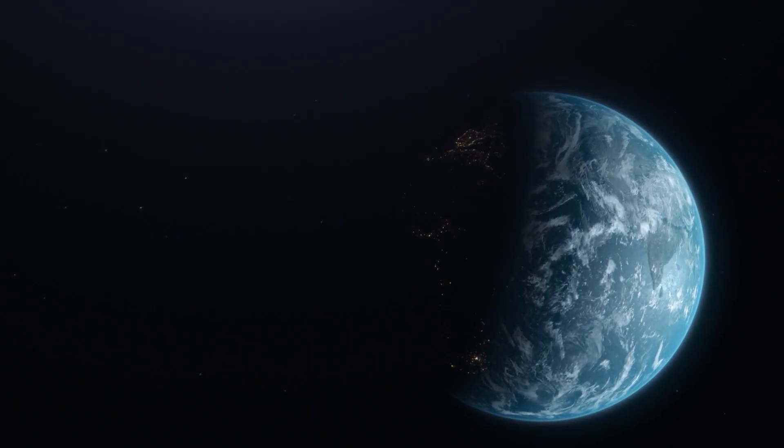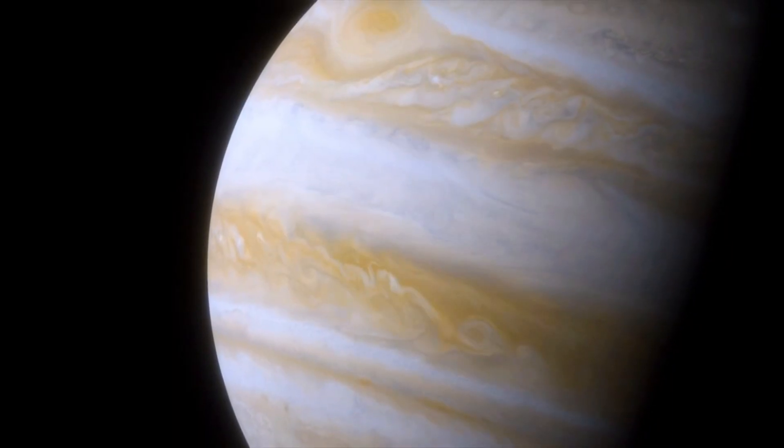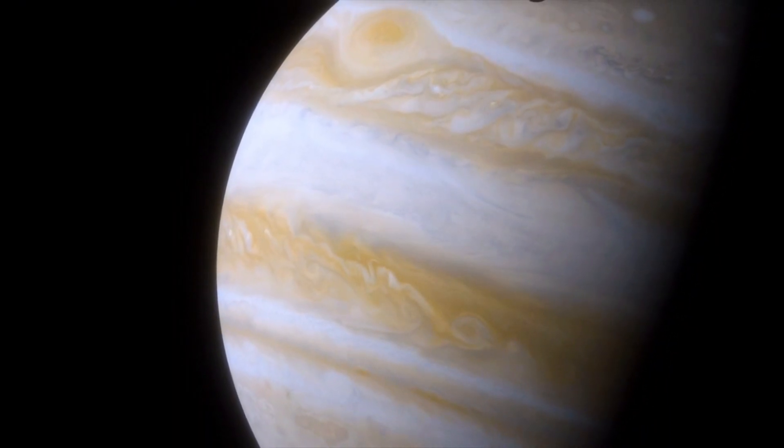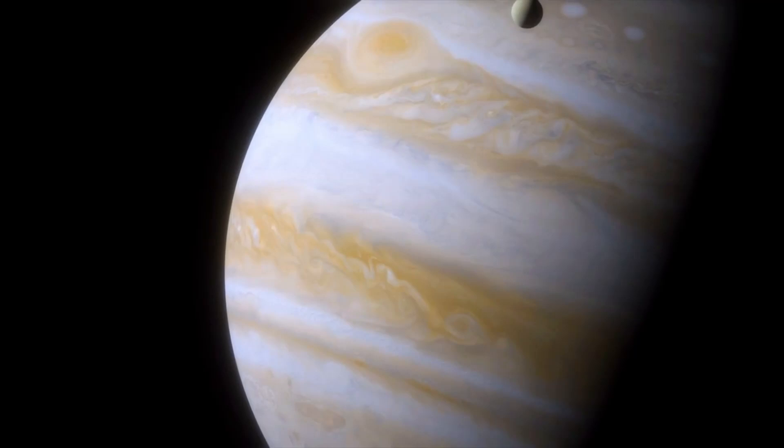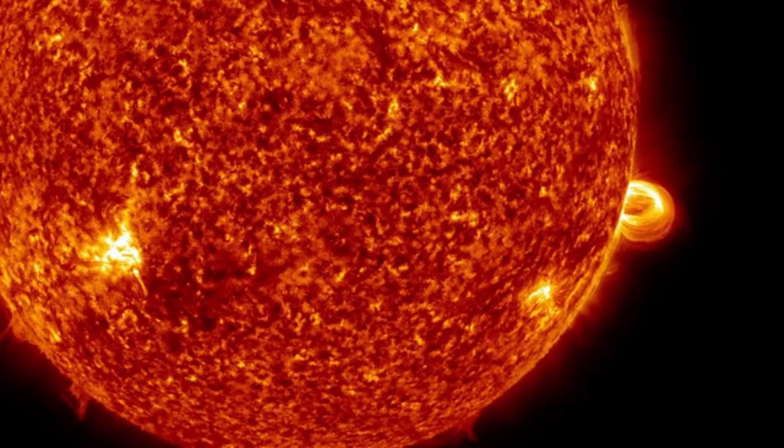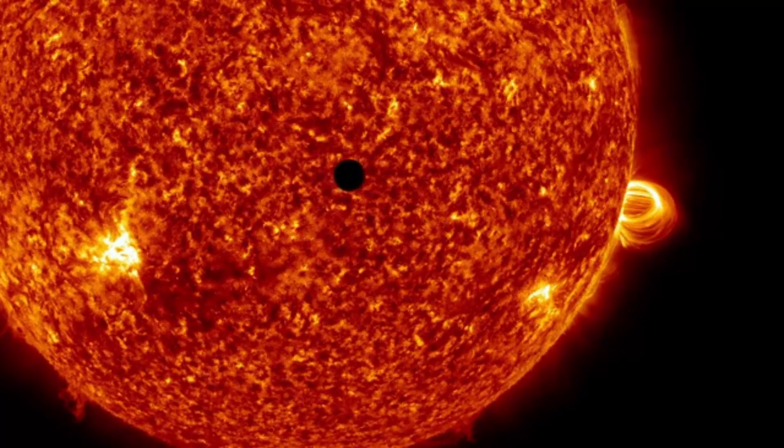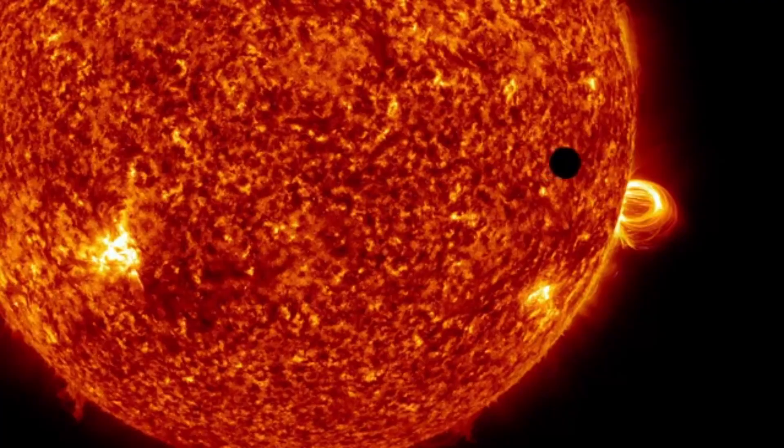Another exoplanet, first perceived in 1988, was confirmed in 2003. As of April 1st, 2024, there are 5,653 affirmed exoplanets in 4,161 planetary systems. Of these, 896 systems have more than one planet.